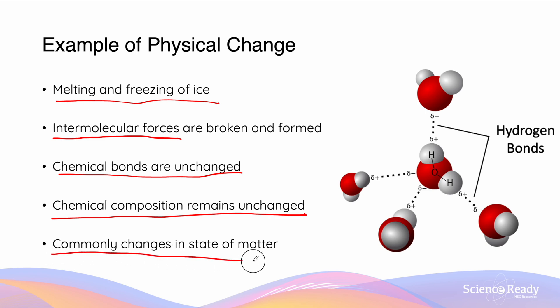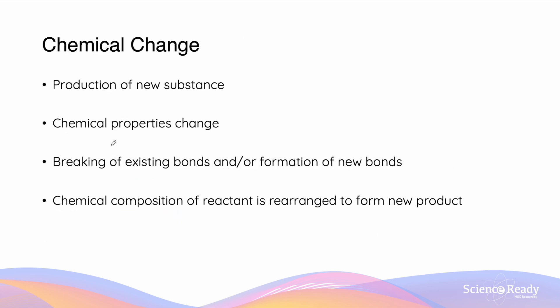And so commonly, changes in state of matter are going to be examples of physical change. Chemical change is different to physical change, because it is actually the production of a new substance altogether. This is often what we mean when we say that the chemical properties of a substance have changed.